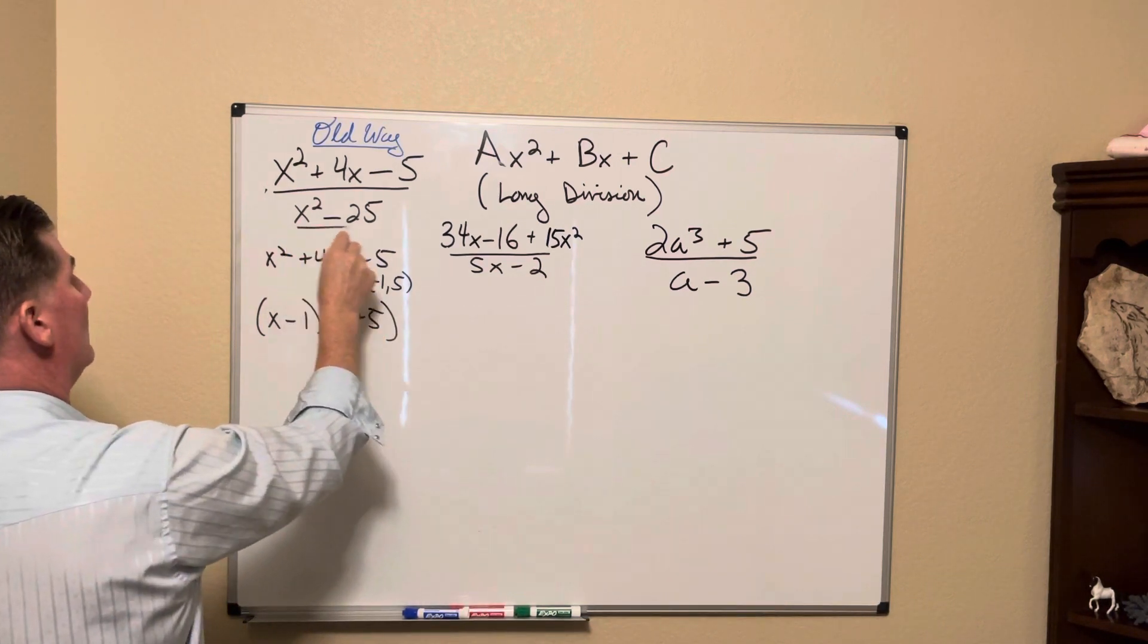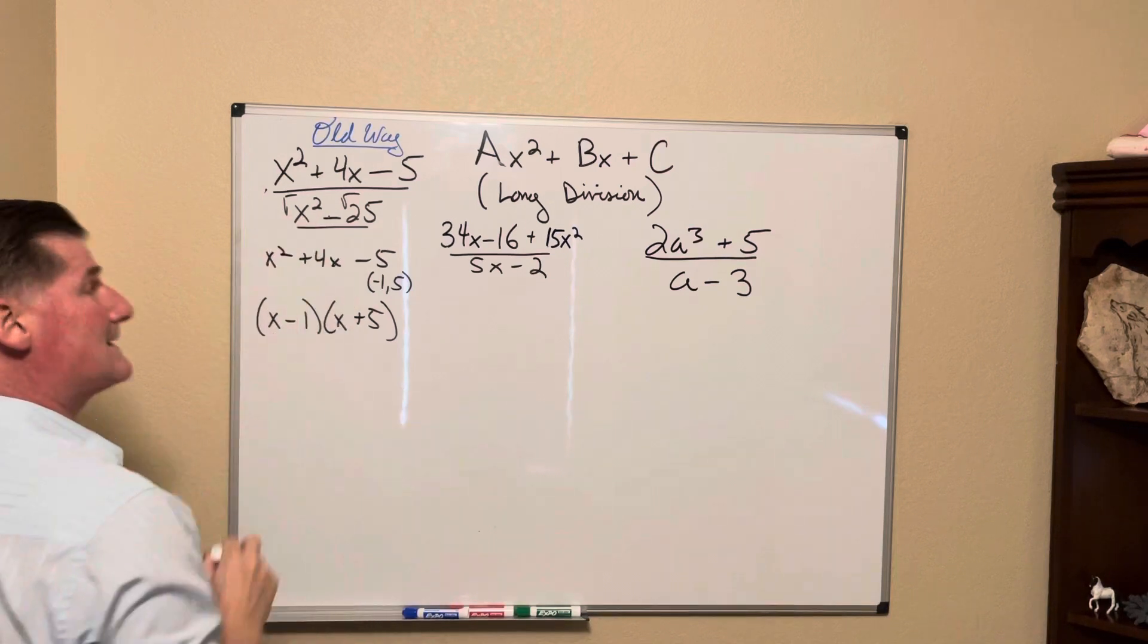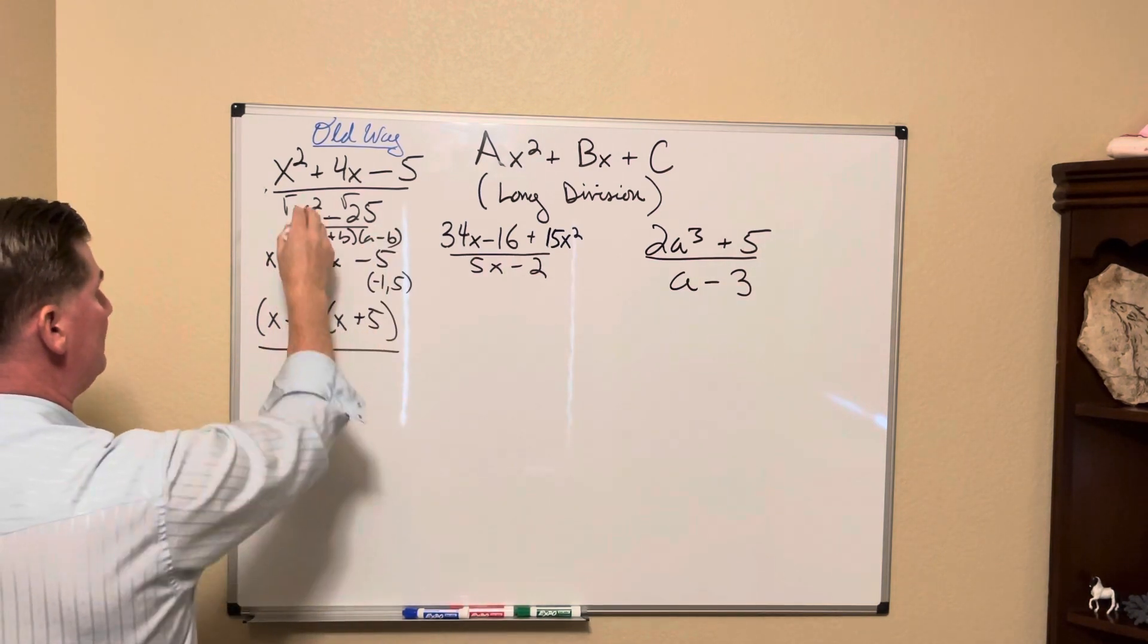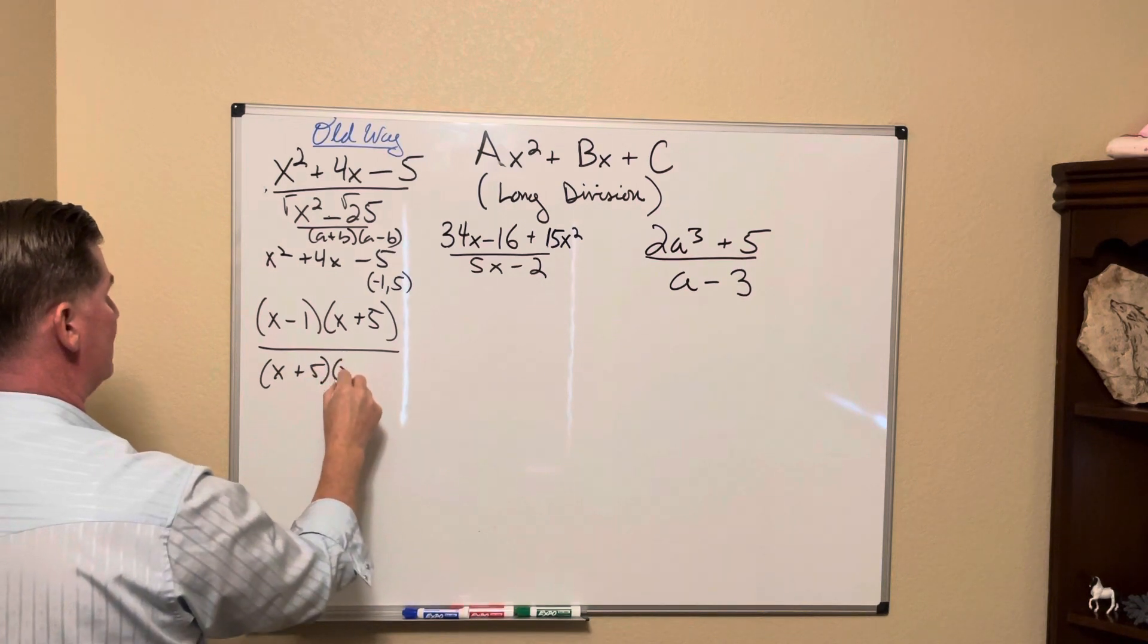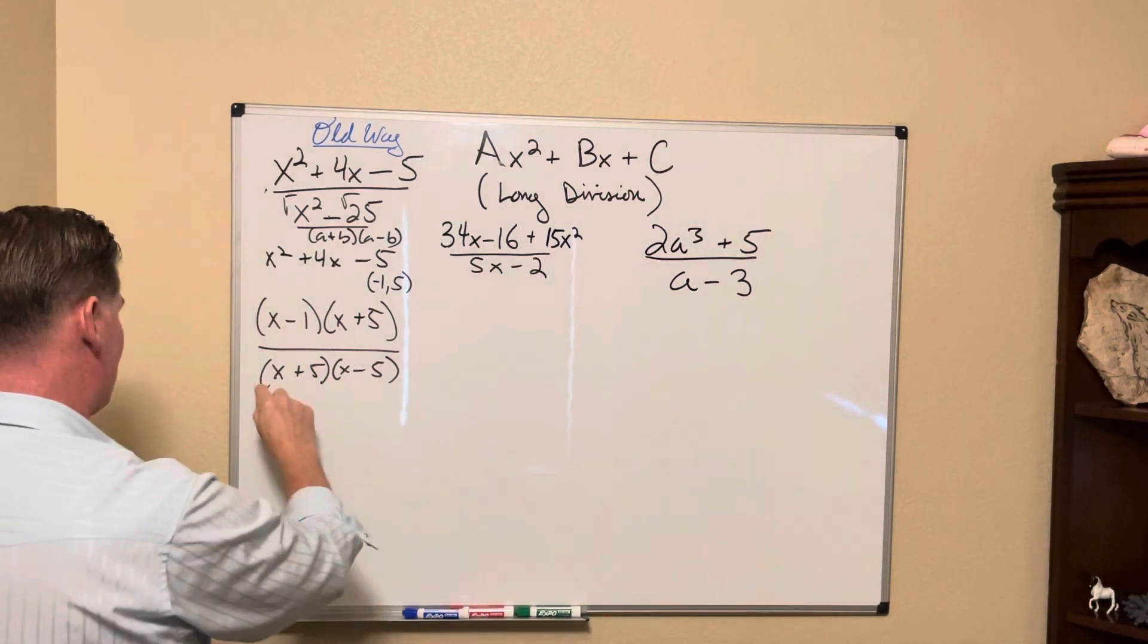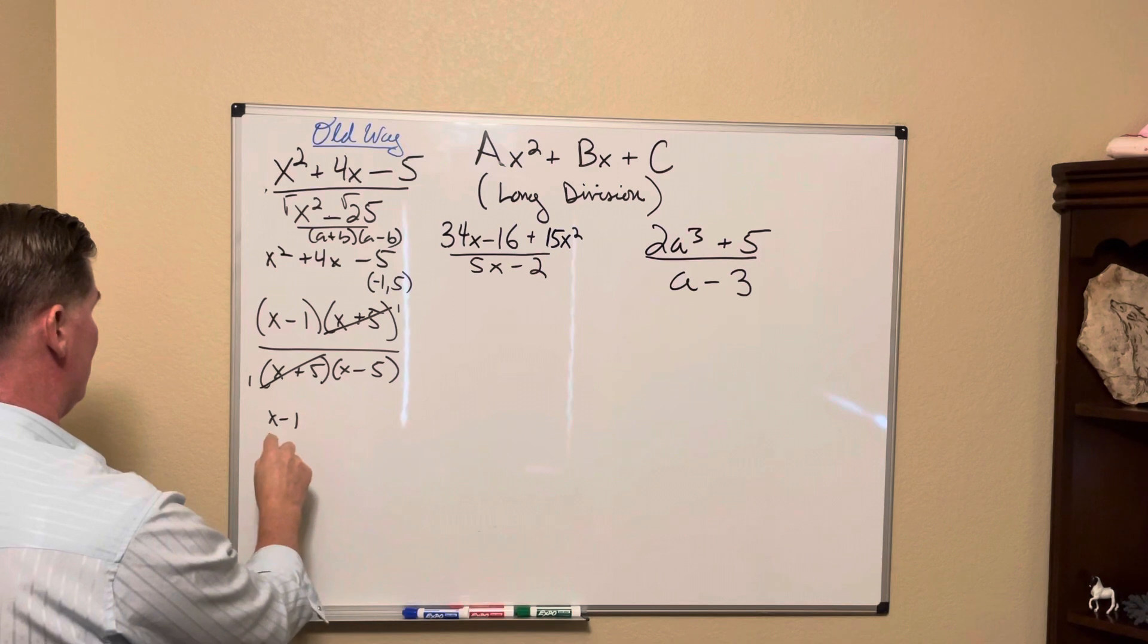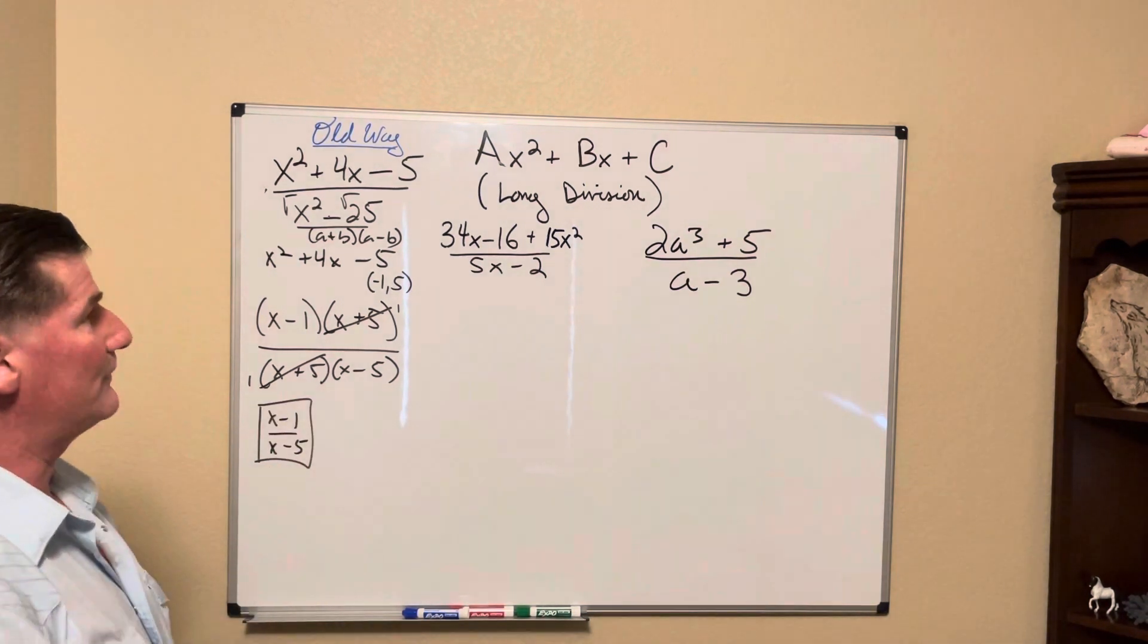Then if you notice we had a rule here: if this was a perfect square and this was a perfect square and you were subtracting them, then you could put that in the form of a plus b and a minus b. In other words, x plus 5 and x minus 5. Then you inspect it. This term can reduce to 1, and then you'd be left with x minus 1 over x minus 5. So factoring was very useful.